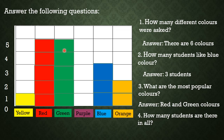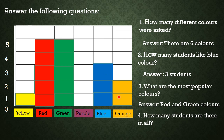How many students are there in all? We can determine the number of students asked by counting the number of colored squares. Now let's count — 1 through 16. So there are 16 students that were asked about their favorite color.